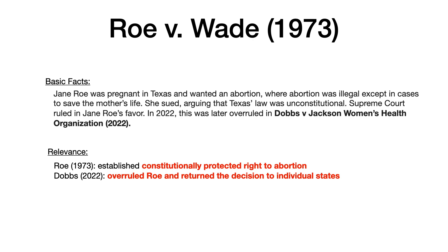No visual mnemonic here. Roe v. Wade and Dobbs v. Jackson Women's Health Organization — just remember Roe established constitutionally protected rights to abortion, and Dobbs overruled that ruling and returned the decision to the states.